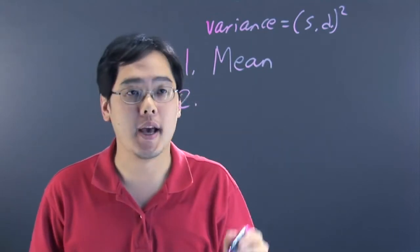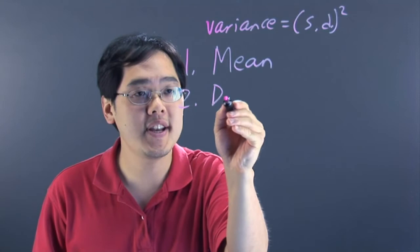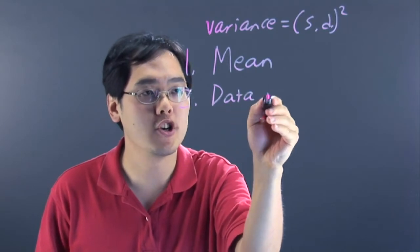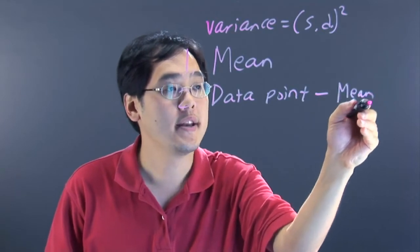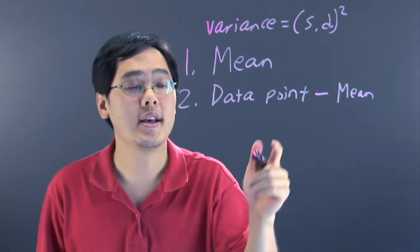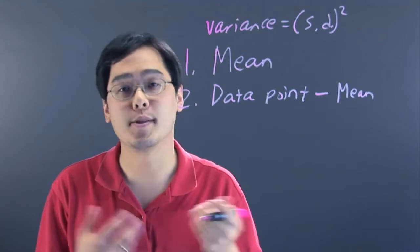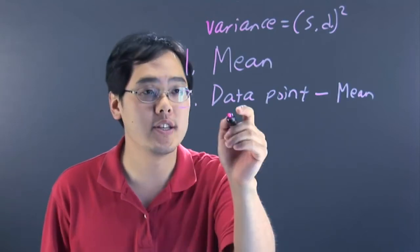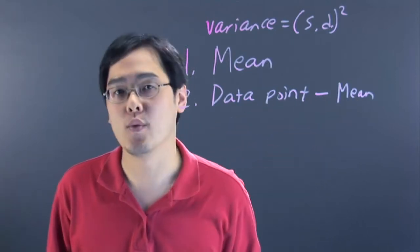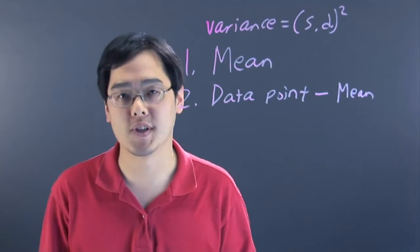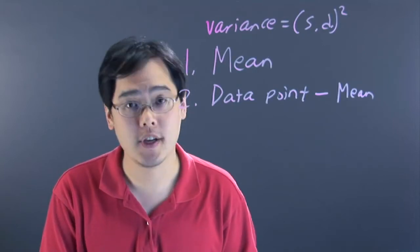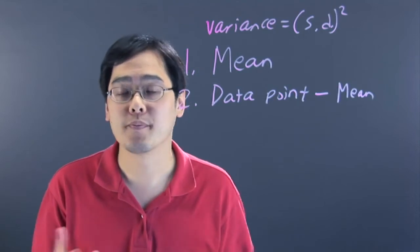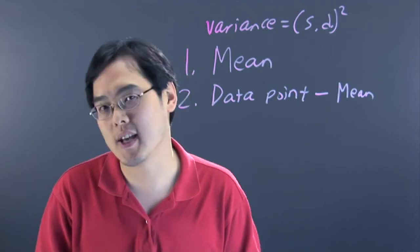The second step is you want to take every data point, every number, and subtract by the mean. Now if you choose to take the mean and subtract by the data point, that's perfectly okay. But you definitely have to subtract the data point with the mean. Either way, there's got to be subtraction involved. And you've got to do that with every single value that you have. Depending on how large your data set is, it could take a little while.